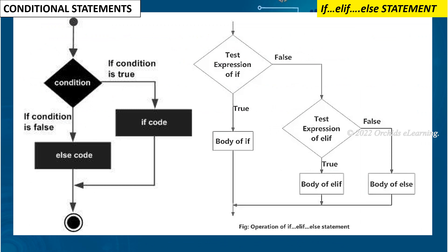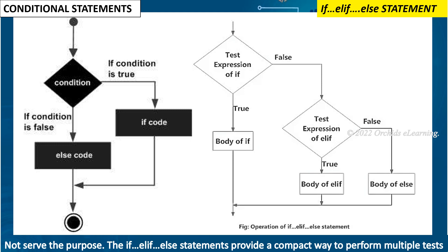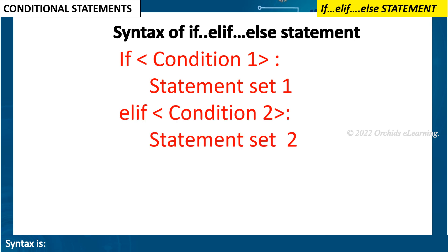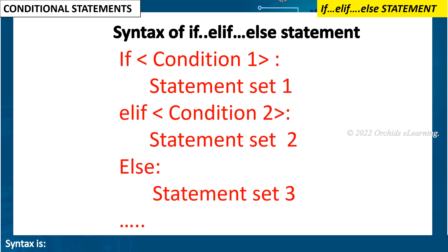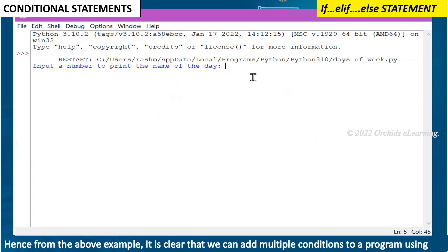Sometimes we need to work with multiple conditions. In this case, using only the if-else construct does not serve the purpose. The if-elif-else statement provides a compact way to perform multiple tests on a condition. Syntax: if condition1: statement set 1; elif condition2: statement set 2; else: statement set 2. For example, a program to display the name of the day according to the number given by the user. From the above example, it is clear that we can add multiple conditions to a program using conditional constructs.